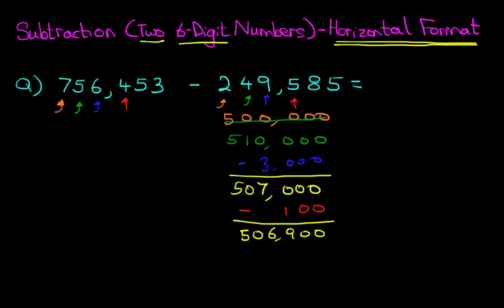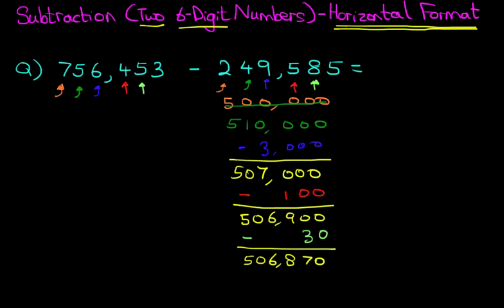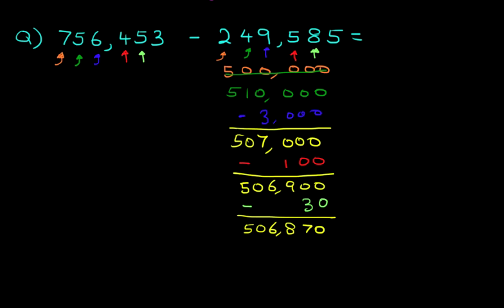We keep going. We are now on to the tens. We've got 5 tens minus 8 tens. 5 minus 8 is minus 3. So let's put a minus down. Minus 30. Again, let's do this in yellow. We've got 506,000 and it becomes 870. I'm just going to scroll down a little bit so we have more space.